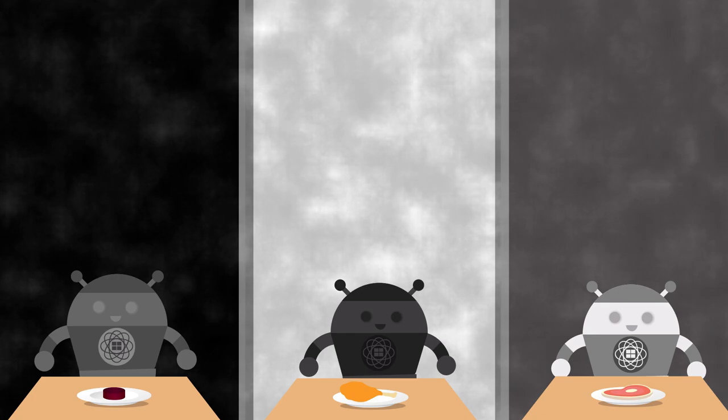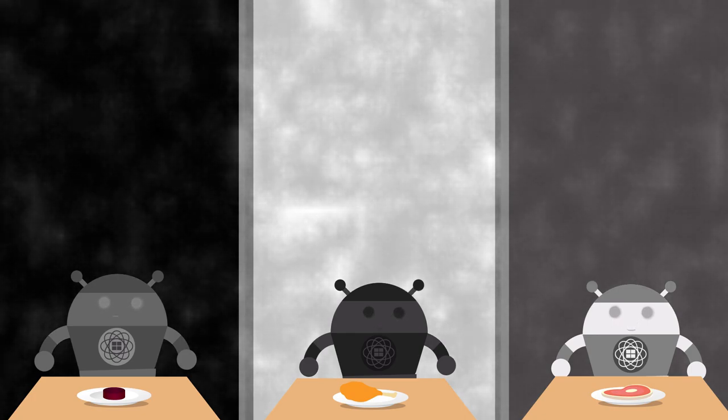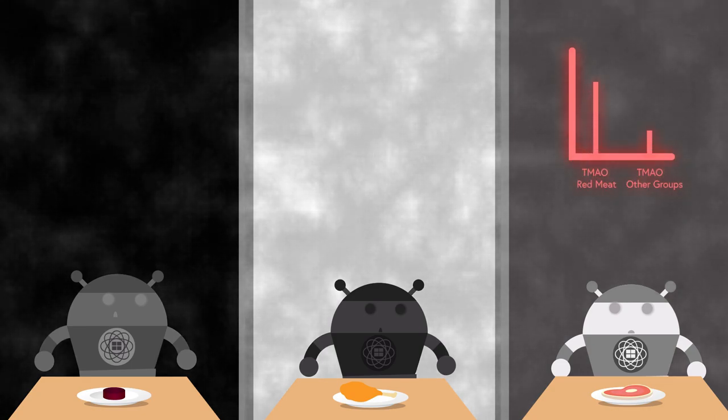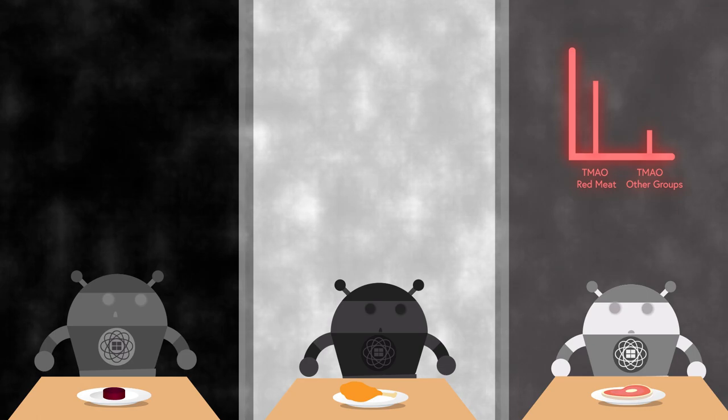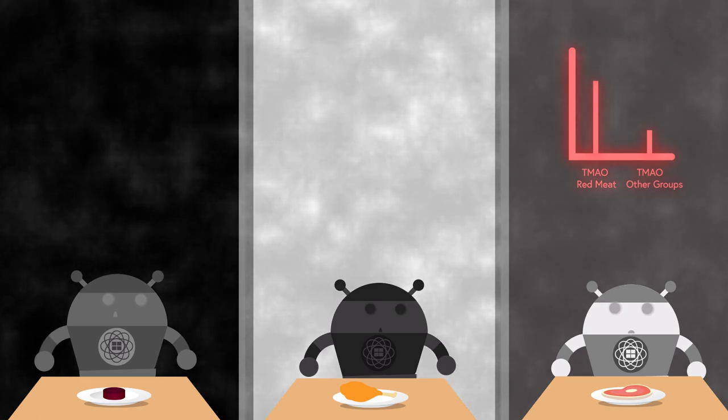Some were given saturated fat diets as well. Upon conclusion of the trial, it was found that the red meat diet increased TMAO levels threefold. It was also found that saturated fat did not significantly affect TMAO levels.